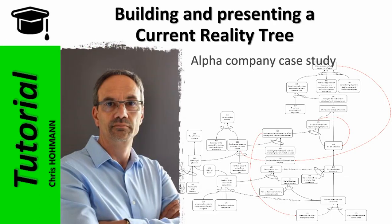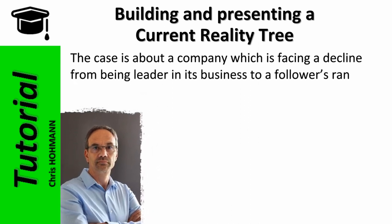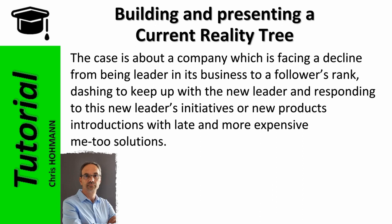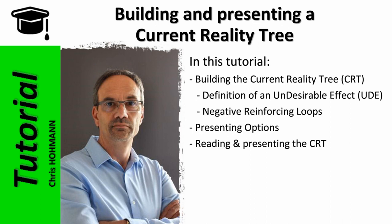Welcome to this tutorial where we are going to build and read the current reality tree. The case is about a company which is facing a decline from being leader in its business to a followers rank, dashing to keep up with the new leader and responding with late and more expensive me-too solutions. Following the first interviews with managers, I picked some undesirable effects. Follow the building of the current reality tree step by step and you will understand what the trouble is.